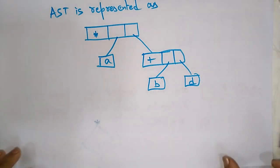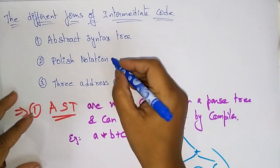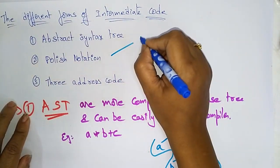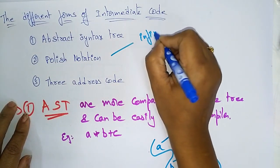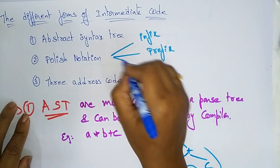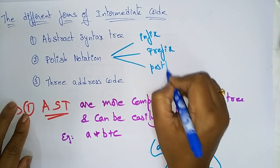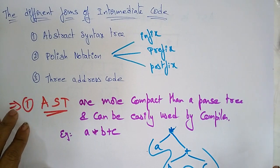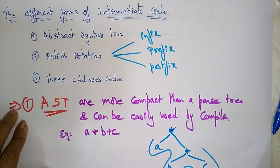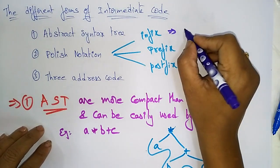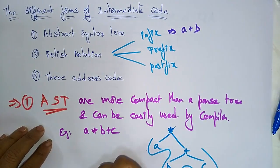Now let's see the second form — polish notation. Polish notation is of three types: one is infix, two is prefix, and three is postfix. Infix means the operator is placed in between the operands — you call it infix. For example, a plus b is an infix expression.